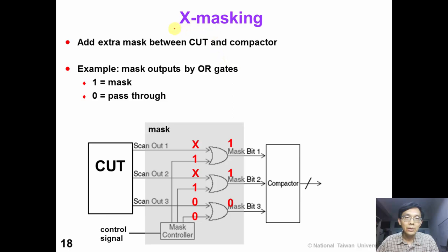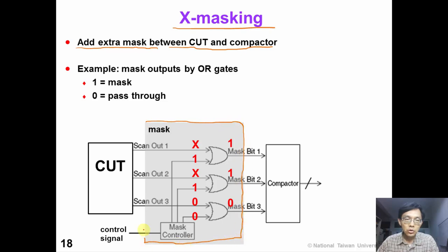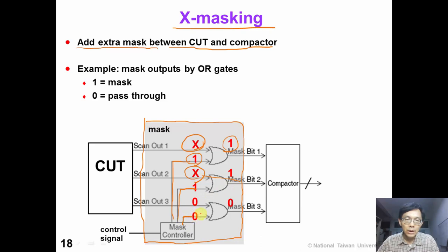We can also add external masks between the CUT and the compactor to mask X values. In this figure, we inject three extra OR gates to mask unknowns. When the mask controller output is 1, this particular unknown is masked. When the mask output is 0, the CUT output can pass through the mask and enter the compactor. In this way, the output of the mask is always deterministic, so we can avoid the problem of unknowns.